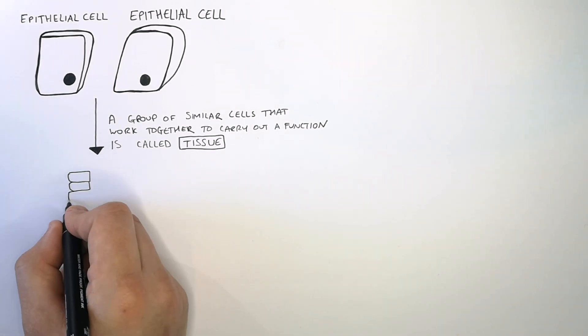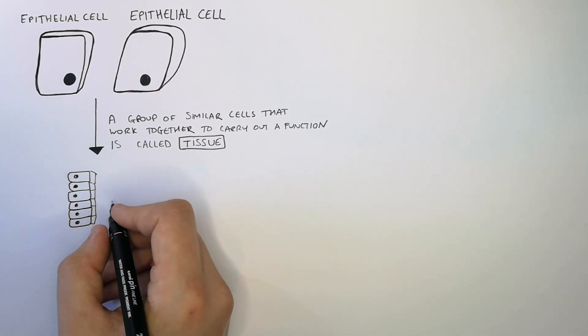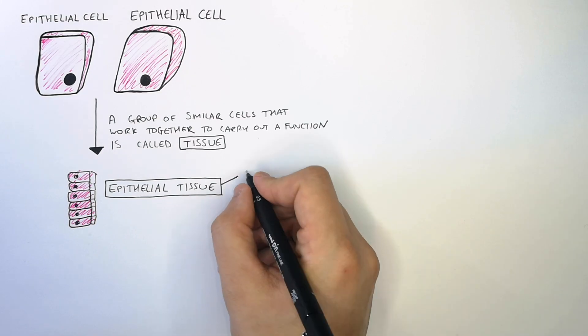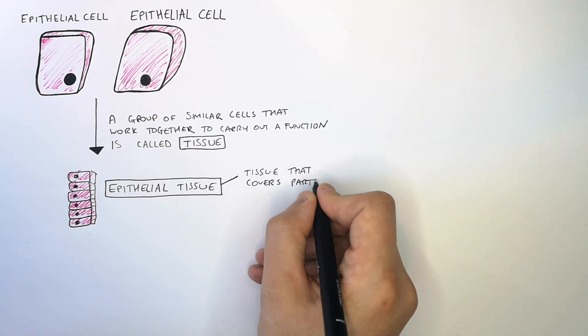I'm now drawing many epithelial cells together. This forms epithelial tissue. Epithelial tissue is tissue that covers parts of the body.